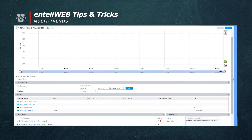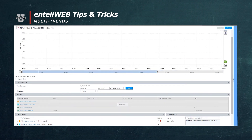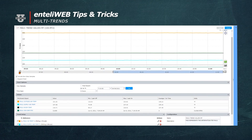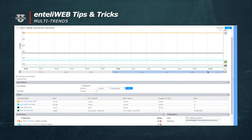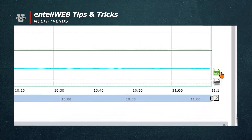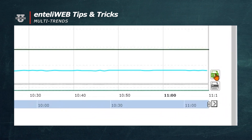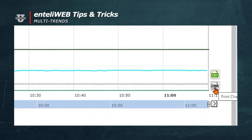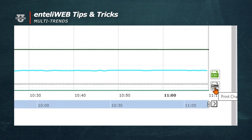I can also slide the scale across the bottom to give us a more vivid picture of the window, or I can put it back to where it was at the date and time for today. You'll notice it also has two options here for retrieving or saving this data. I could save it as a CSV file format or I can print this chart.